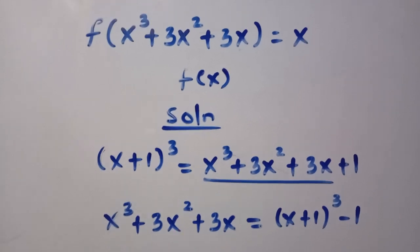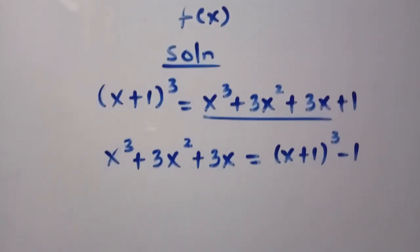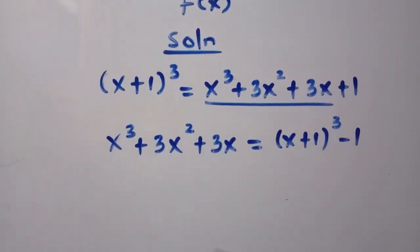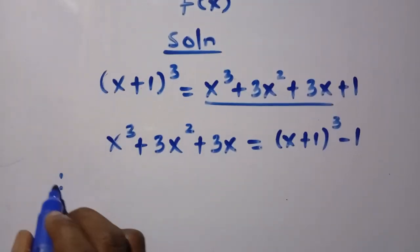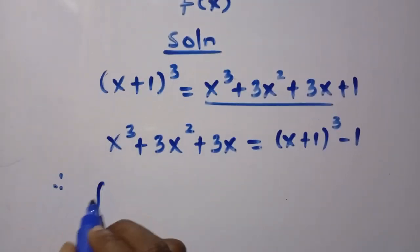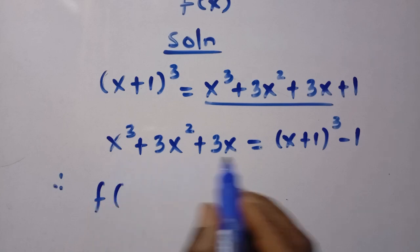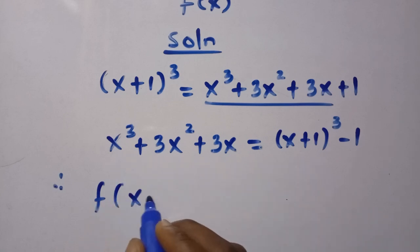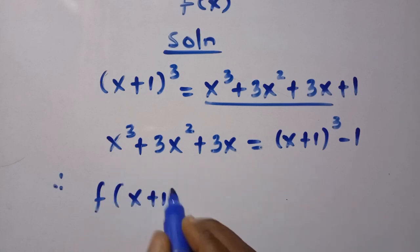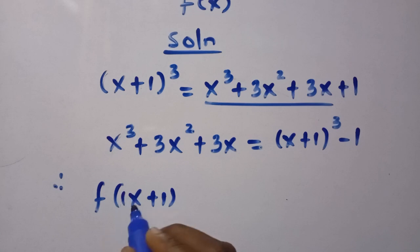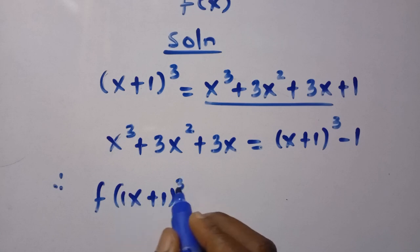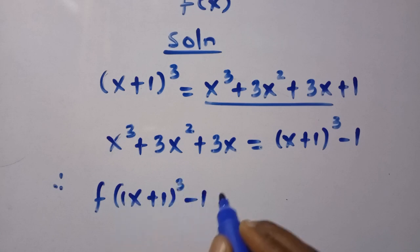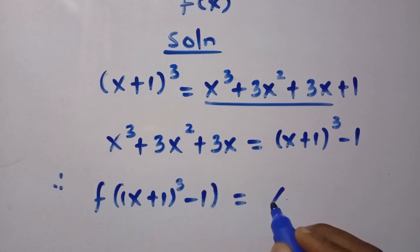Now we come back to the question and we have to replace it. Therefore we have f of, instead of the whole of this expression, we replace it with (x+1)³ - 1, which equals x.